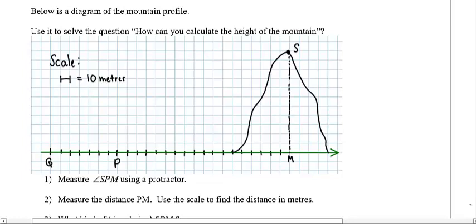Here's an example of the mountain profile. Use it to solve this question: How can you calculate the height of the mountain? Here's my mountain. The top of the mountain is at S. To do this, I'm going to ask you to measure an angle, so you'll need a protractor. Get one. If you can't, you'll just watch me do it. If I connect S, P, and M, you'll see that I have an angle here. I've measured it with my protractor and got 31 degrees.